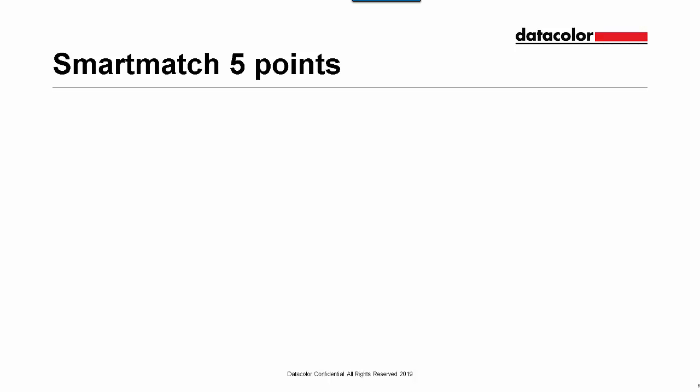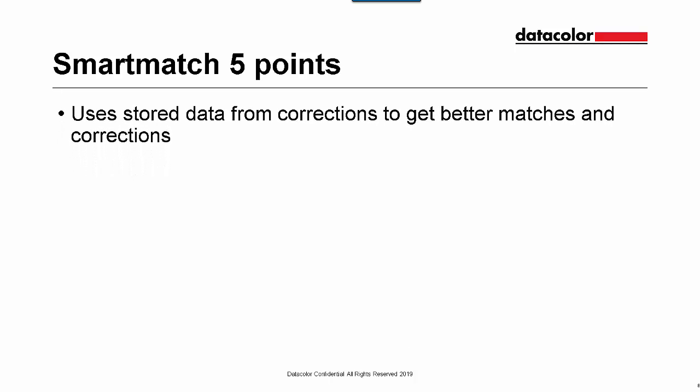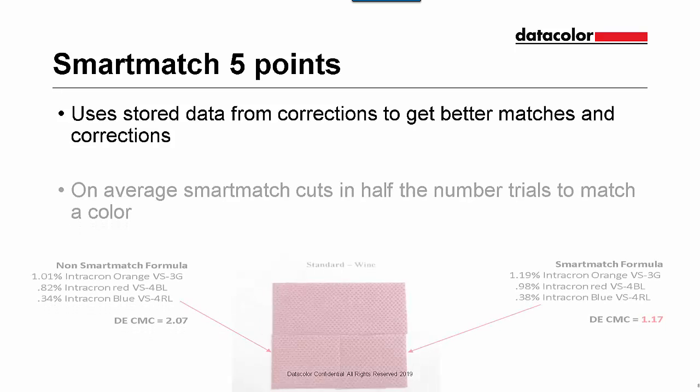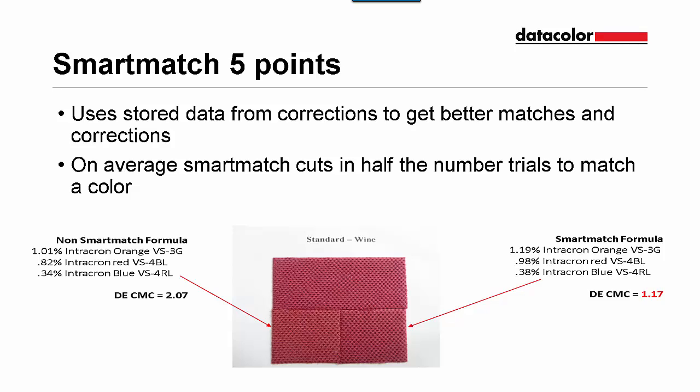The next option is Smart Match and it is worth five feature points. Smart Match uses stored data from corrections to get better matches and feature corrections. On average, Smart Match cuts in half the number of trials needed to match a color. From our example, a non-Smart Match match gets a DE of 2.07, whereas when Smart Match is turned on, the same match gets a DE of 1.17 — a considerable improvement.